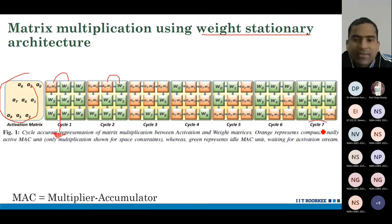But the architecture is different. It's called output stationary format or output stationary architecture. Here, green means idle MAC units. And orange means active MAC units.